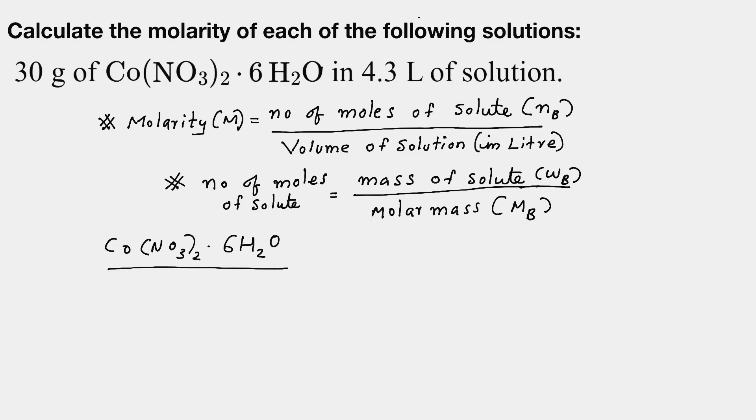Cobalt has a molar mass of 58.7. Now you have nitrogen. How many nitrogens? Two nitrogens. You can see two nitrogens, so 14 times 2.